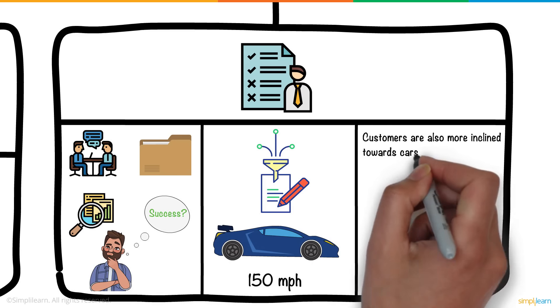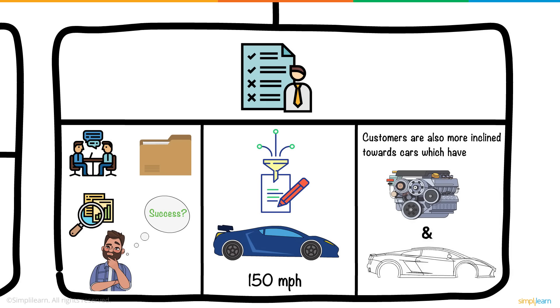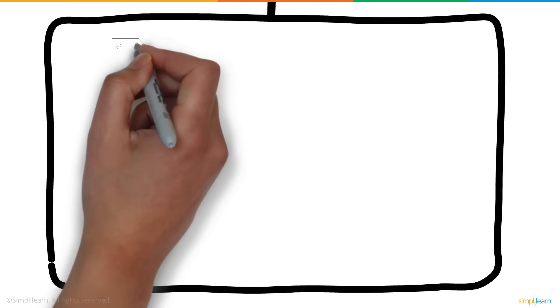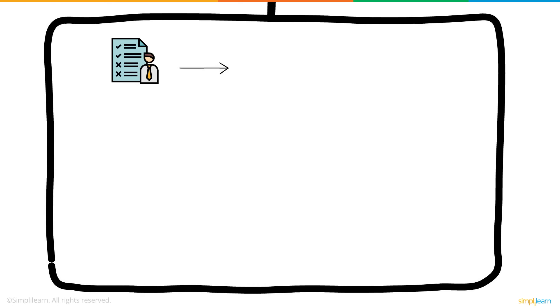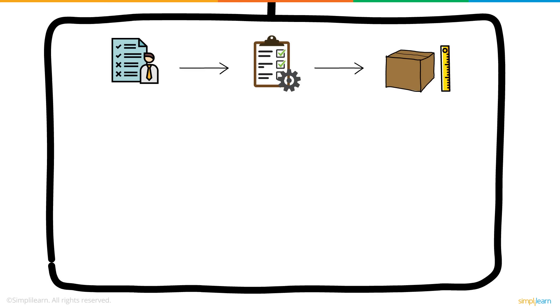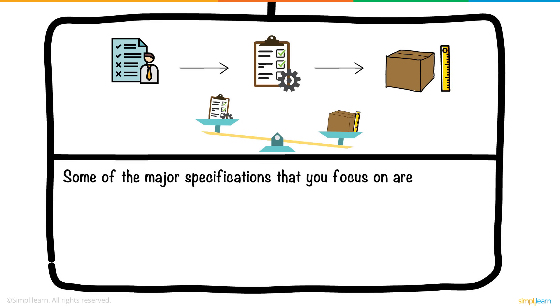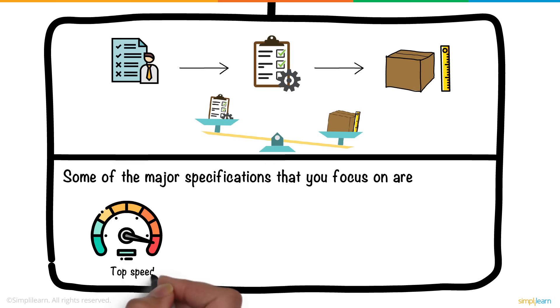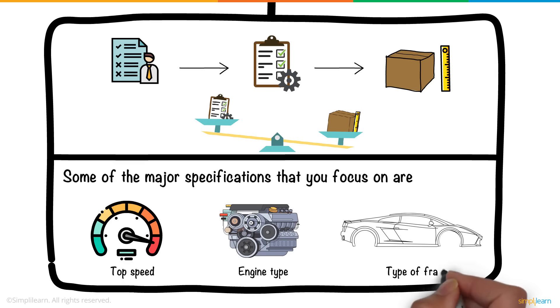Customers are also more inclined towards cars which have V6 engines and an aerodynamic frame. Then, in the Measure phase, you use the customer's requirements to create a specification. This specification helps define the product in a measurable method, so that data can be collected and compared with specific requirements. Some of the major specifications that you focus on are the Top Speed, Engine Type, and Type of Frame.